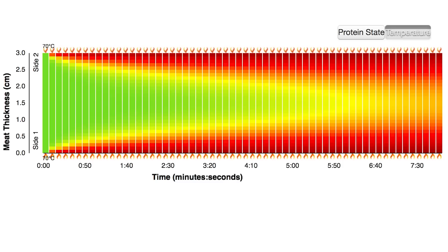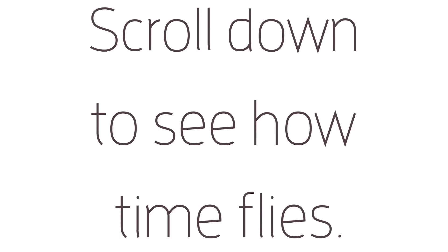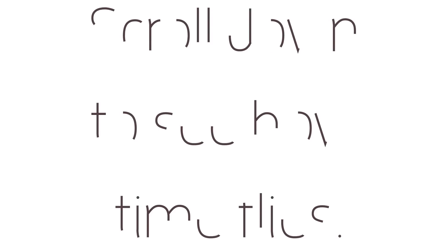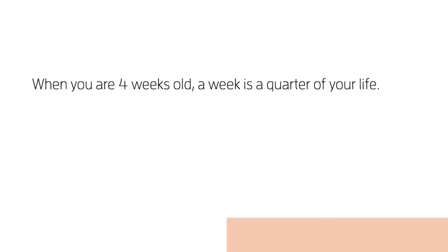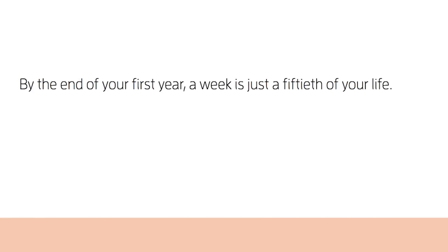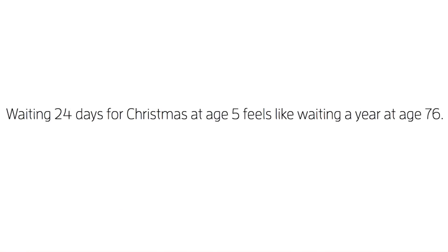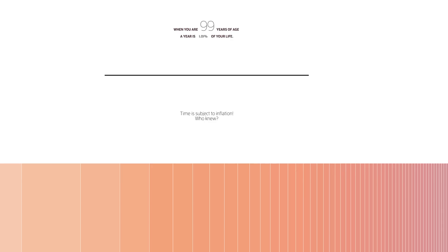Time flies when you're having fun cooking meat — but why? Find out on 'Why Time Flies,' an interactive timeline you scroll through to understand why time is relative psychologically. It starts at birth: at four weeks old, a week is a quarter of your life, but after a year it's only about 1/50th. For example, waiting 24 days for Christmas at age five feels the same as waiting a year at age 76 — each is about 1% of the respective lifetime. As you scroll, you'll notice it goes faster and faster, up to 99 years.